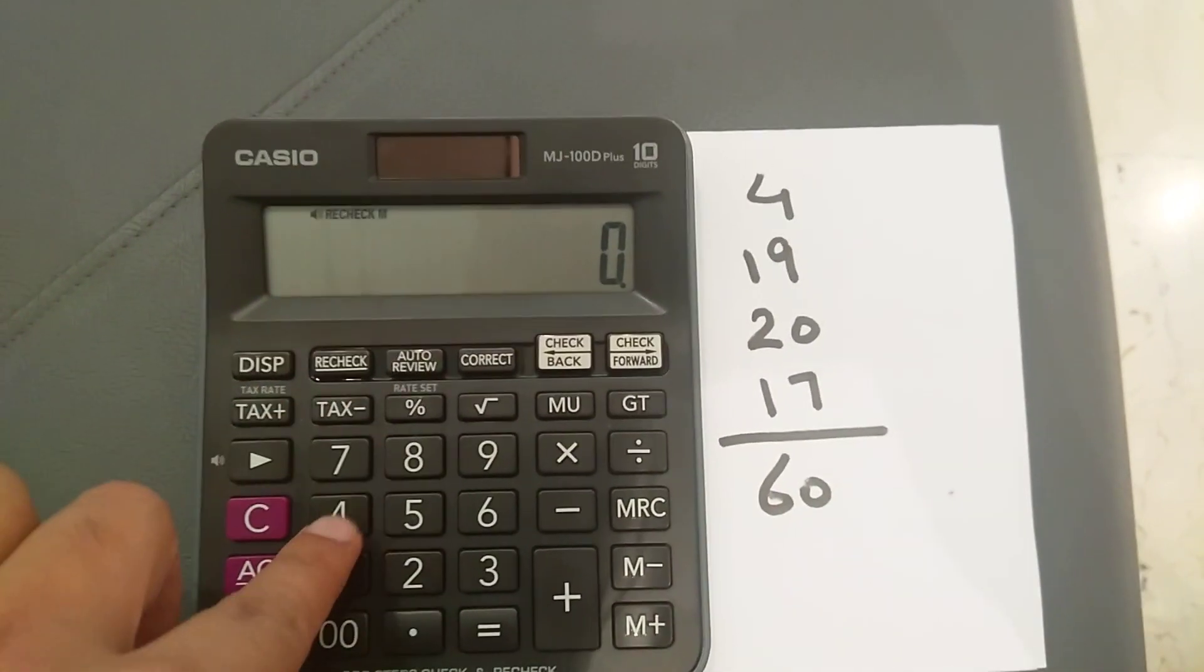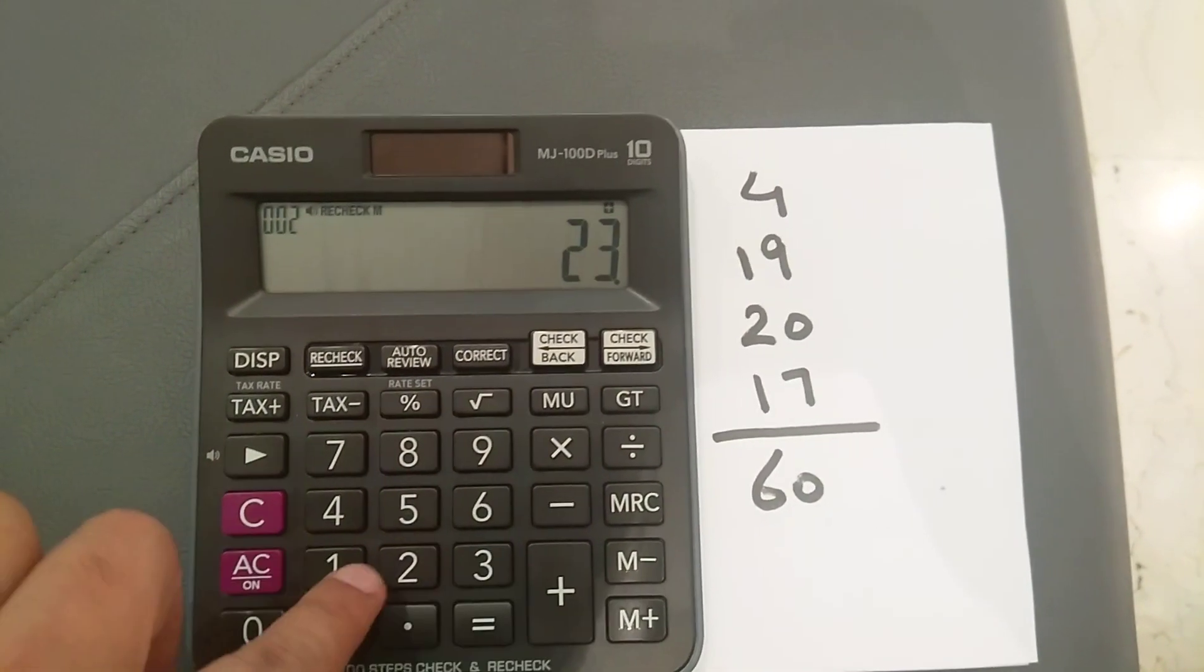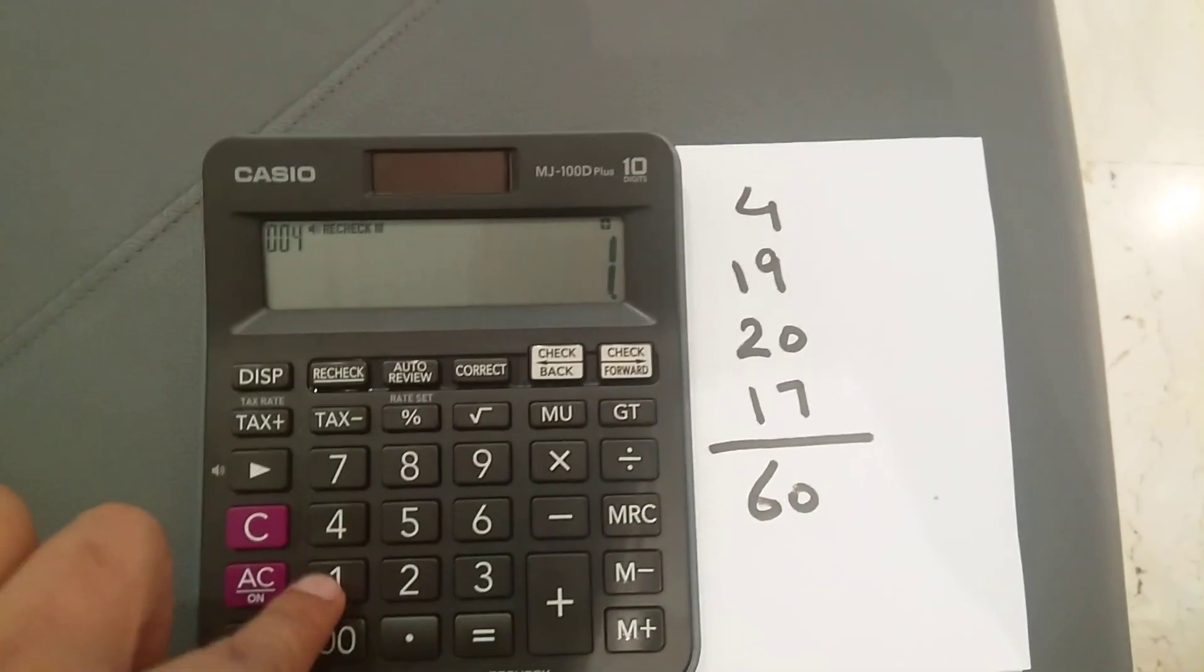I press the recheck button. I will do the same calculations again: 4 plus 19 plus... now I will not make any mistake... plus 20 plus 17.